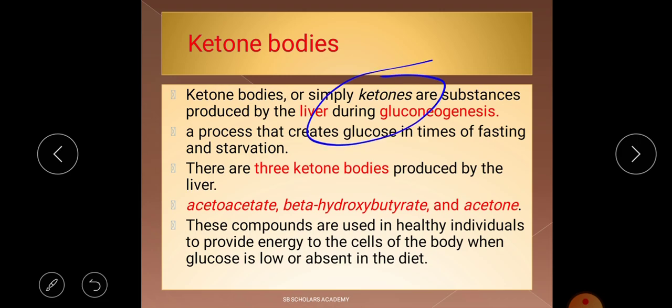Ketone bodies can simply be considered as ketones in layman's language. These are substances produced by the liver during gluconeogenesis. So ketone bodies are essentially ketones produced by the liver during this process.